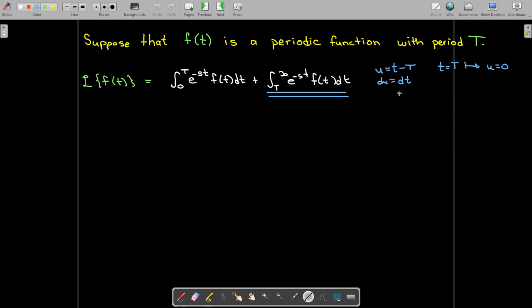We're going to make a change of variables. Let u equal t minus capital T, which means du is the same as dt. Looking at the bounds,